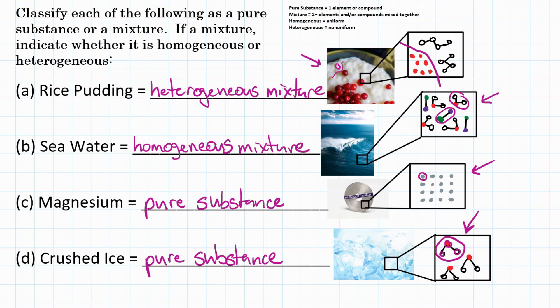There you have it. Classifying matter as either a substance or a mixture. And then if it's a mixture, is it a homogeneous mixture or a heterogeneous?